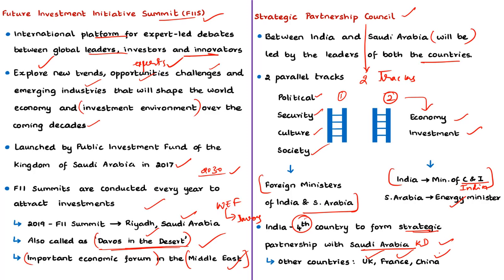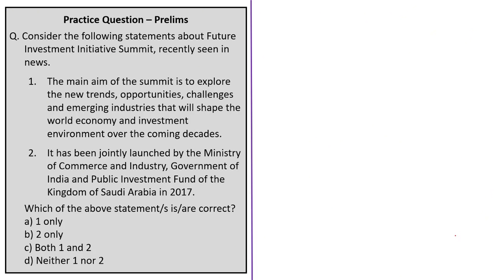The news article in the business column mentions that business personalities addressed the Future Investment Initiative Summit. They noted that the slowdown in the growth of the Indian economy is temporary, and shared opinions that reforms brought by the Government of India will reverse the slowdown trend in the coming months.